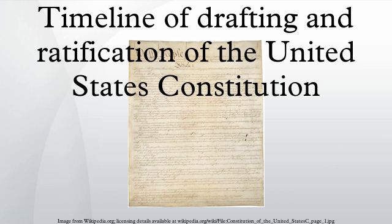August 25: A Committee of Eleven composed of Pierce Butler, Daniel Carroll, Jonathan Dayton, William Few, Thomas Fitzsimons, Nathaniel Gorham, John Langdon, George Mason, George Read, Roger Sherman, and Hugh Williamson is selected to consider issues related to interstate trade and navigation.